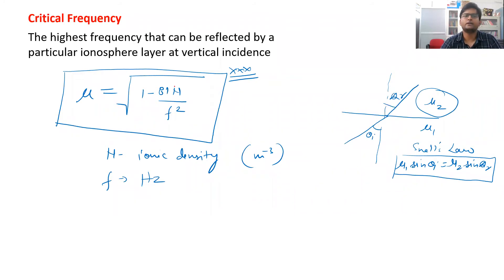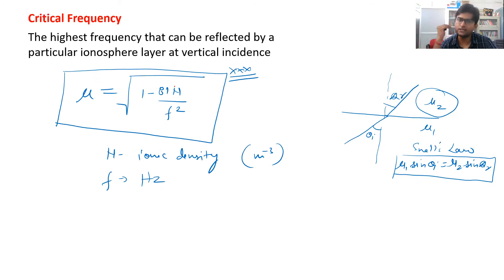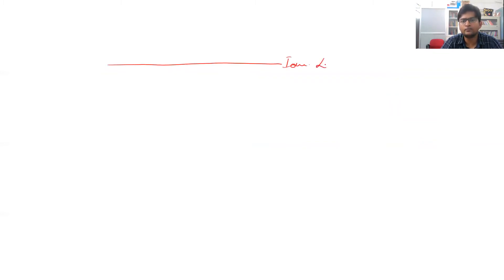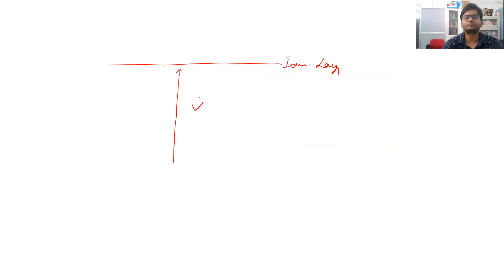Critical frequency is defined as the highest frequency that can be reflected by any particular ionospheric layer when the wave is incident normally on that layer. For example, for the E layer, the critical frequency is the maximum frequency that can be reflected when the wave hits that layer at normal incidence and is completely reflected back to earth.